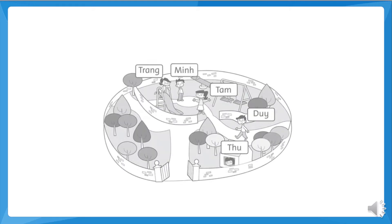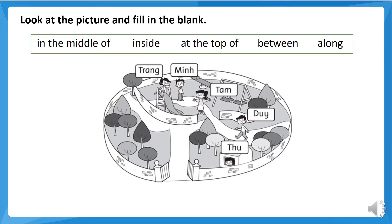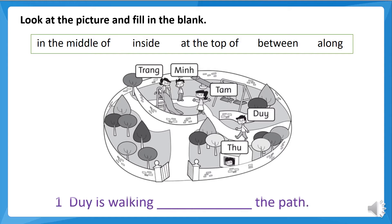Time to practice with those words. Class, I have this picture — five children are at the playground. Look at them and fill in the blank. Use the words in the box to complete five questions.